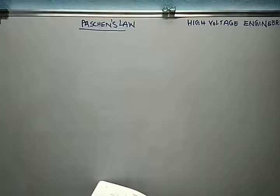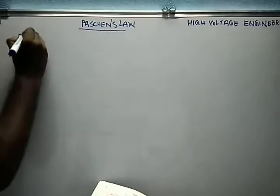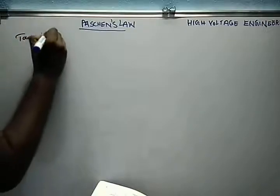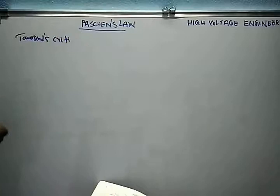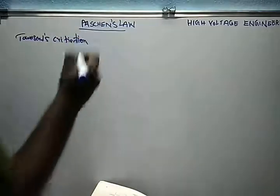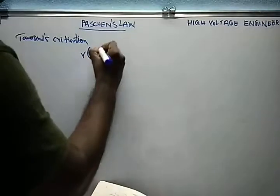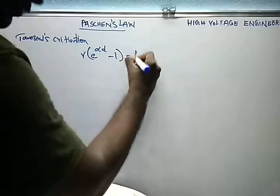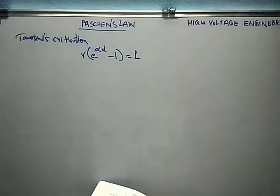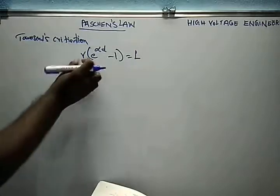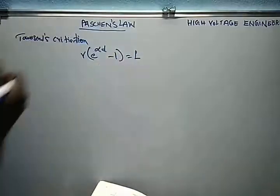For the derivation, let us consider Townsend's theory. From Townsend's theory we use the secondary ionization process. The Townsend breakdown criterion is: γ(e^(αd) − 1) = 1. Let us call this Equation 1.